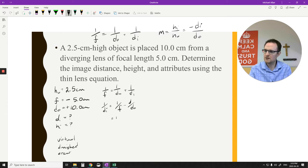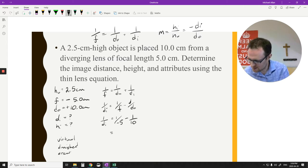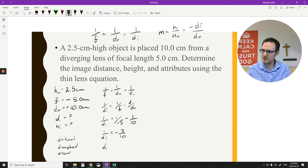So 1 over negative 5, everything's in centimeters, so I'll just drop the units for now, just know that at the end it's supposed to be in centimeters. Then 1 over 10, both negative. Both negatives are going to make this number more negative, so that means I should have a negative number here. Let me just type in my calculator. So I get negative 3 over 10. So 1 over di, and then I do a little flip-a-rooney, and I get negative 3.3 centimeters.